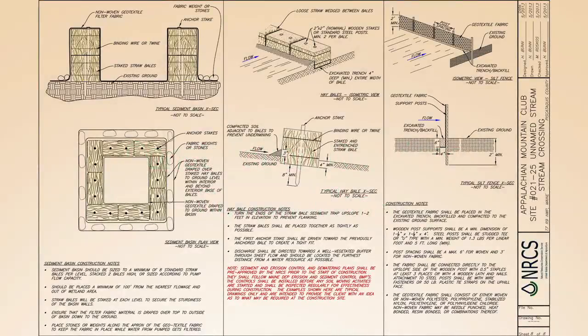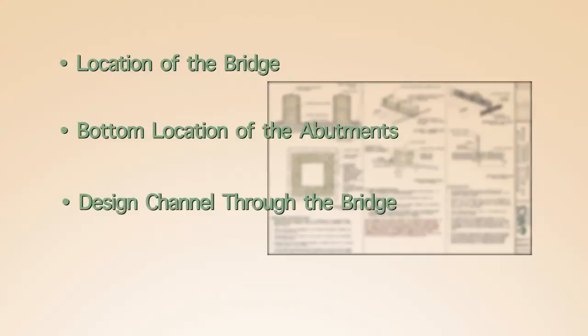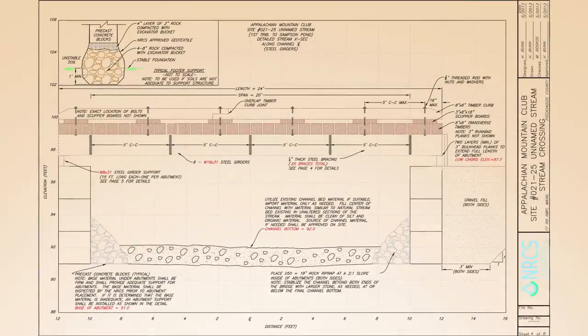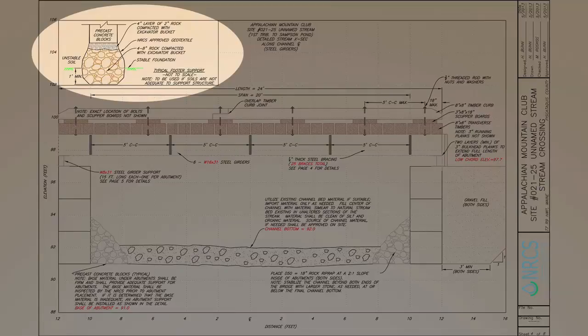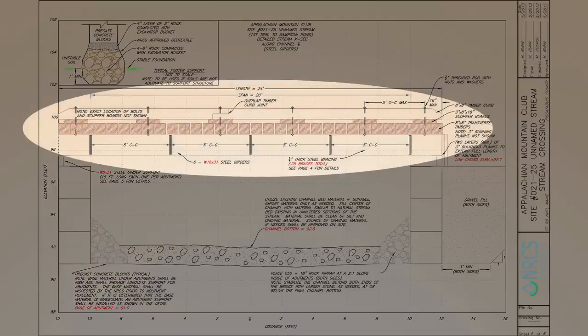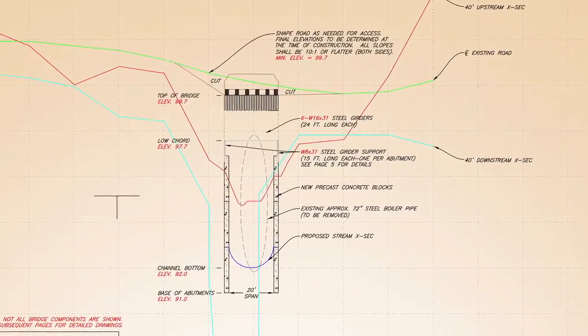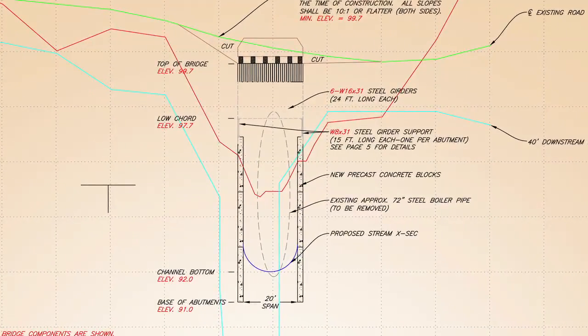Before construction starts, a design needs to be completed that shows enough detail so the bridge can be installed properly. For a bridge, the key components are the location of the bridge, the bottom elevations of the abutments, the design channel through the bridge, and the bridge opening width or span. This drawing shows a cross section of the bridge, as well as the elevation of both the bottom of the footing and the design channel elevation through the bridge, and the bridge opening width or span. The location of the bridge in comparison to the existing culvert to be replaced is also shown.